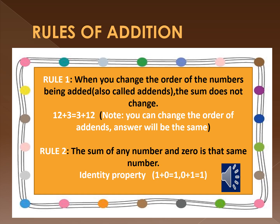Rules for addition. Rule 1: When you change the order of numbers being added, the sum does not change. For example, when you add 12 plus 3 or 3 plus 12, the answer will be the same.